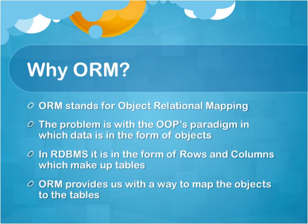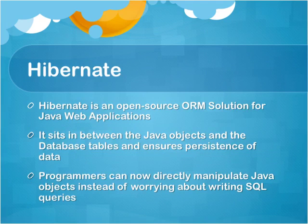So what is Hibernate? Hibernate is an open source ORM solution — an ORM framework for Java applications. It can be used for both standalone and web applications, but is mostly used along with Struts for web applications to support the MVC architecture. It basically sits between the Java objects and the relational database tables and helps to persist data from the object format to the relational database format, which is rows and columns.